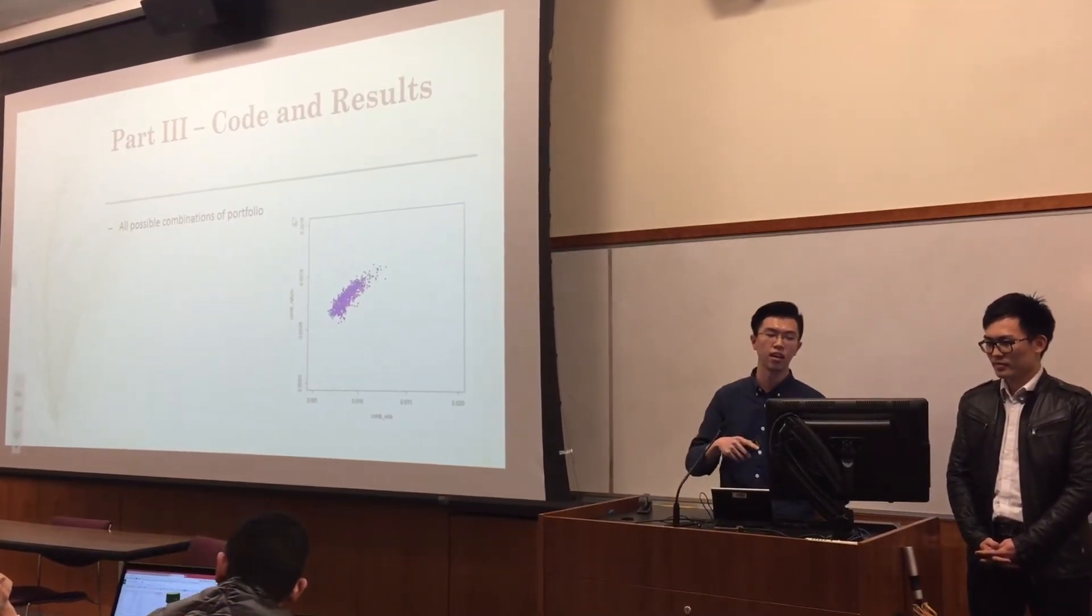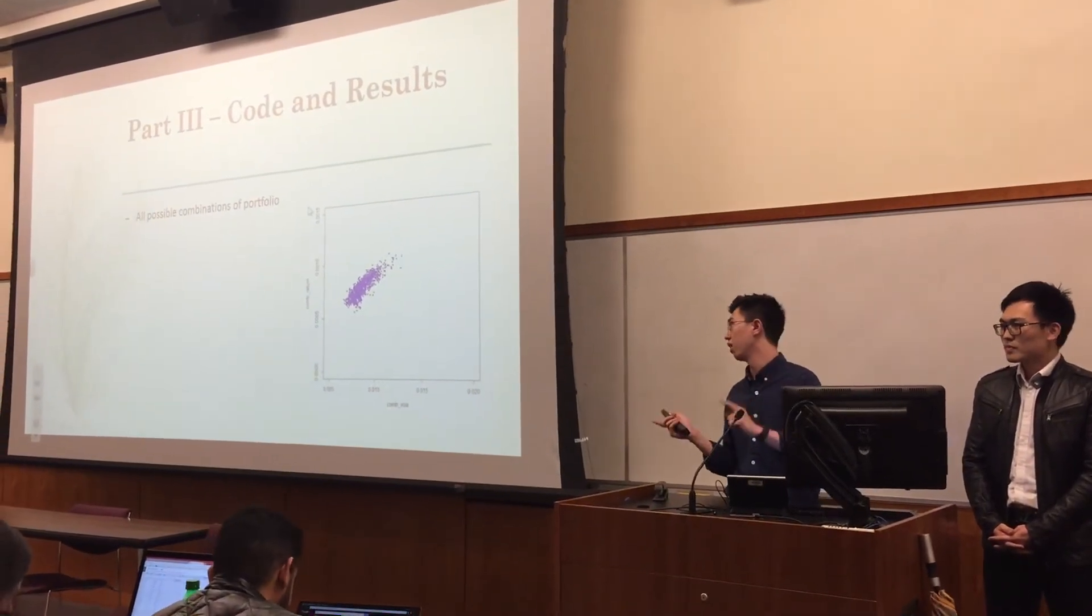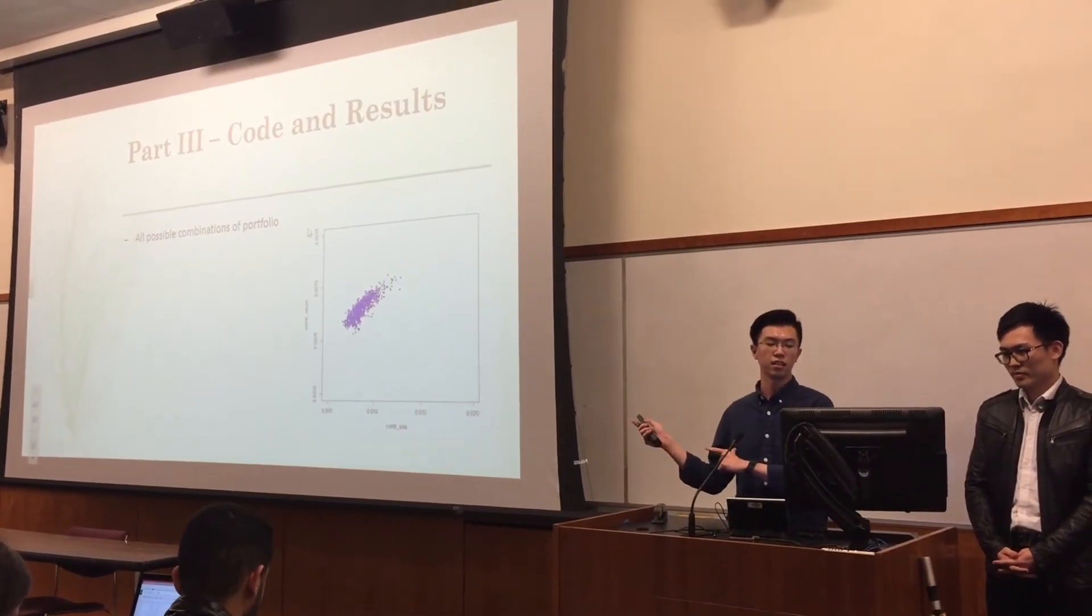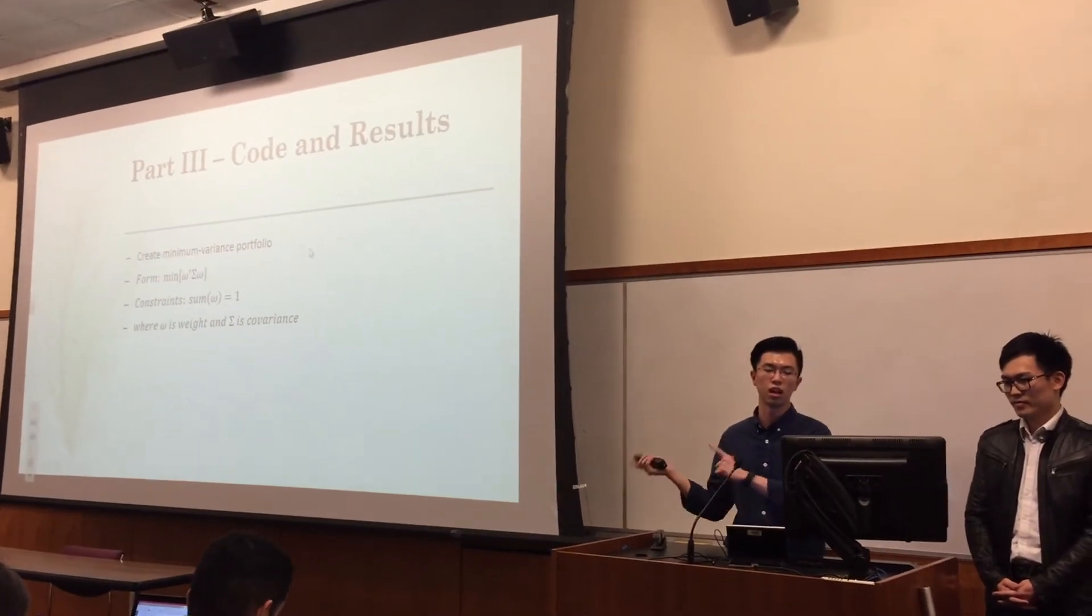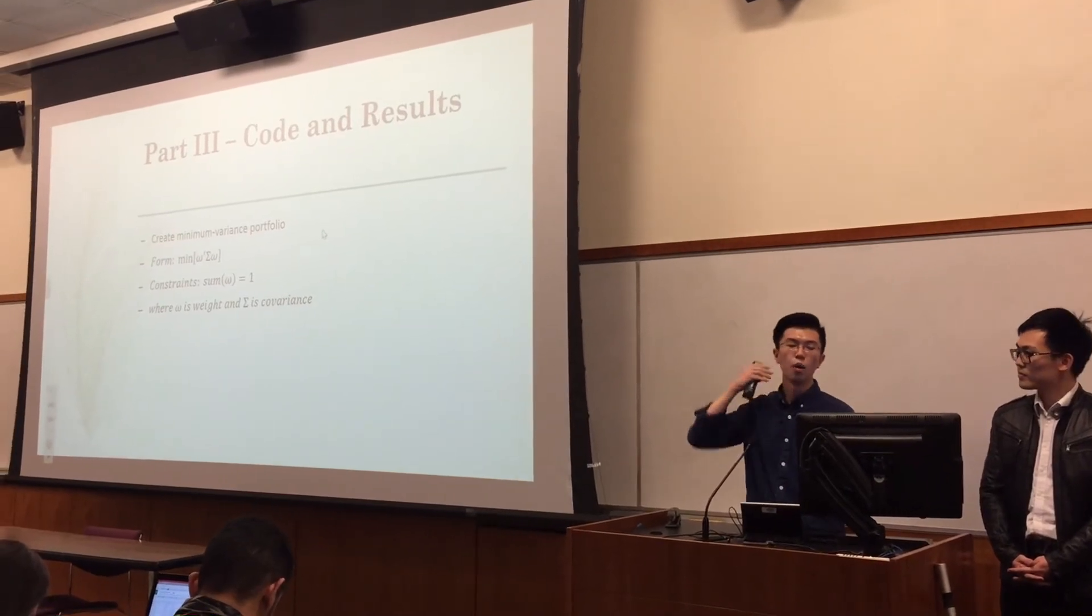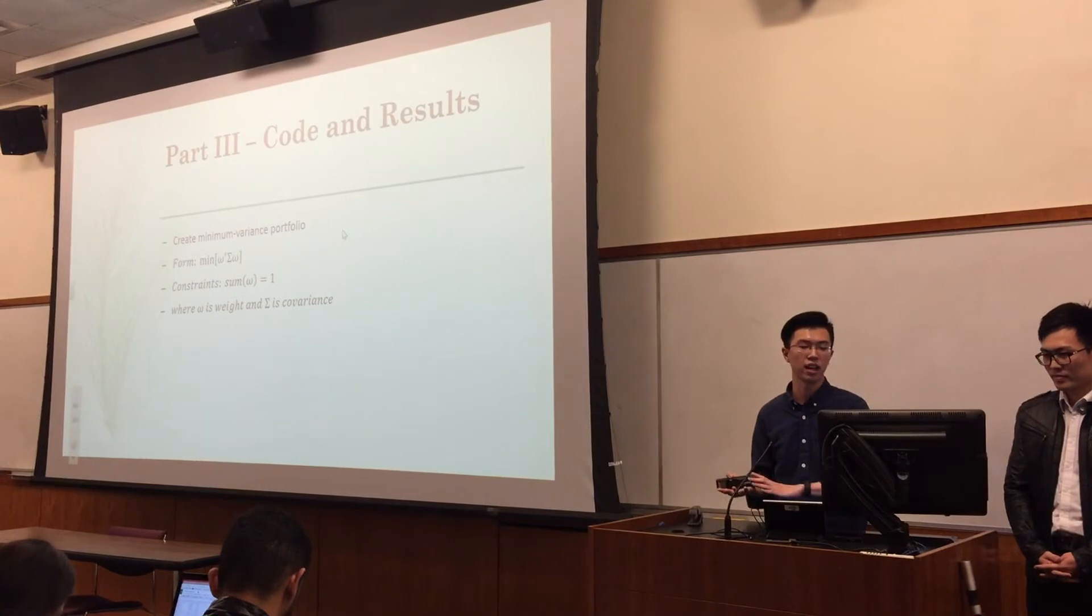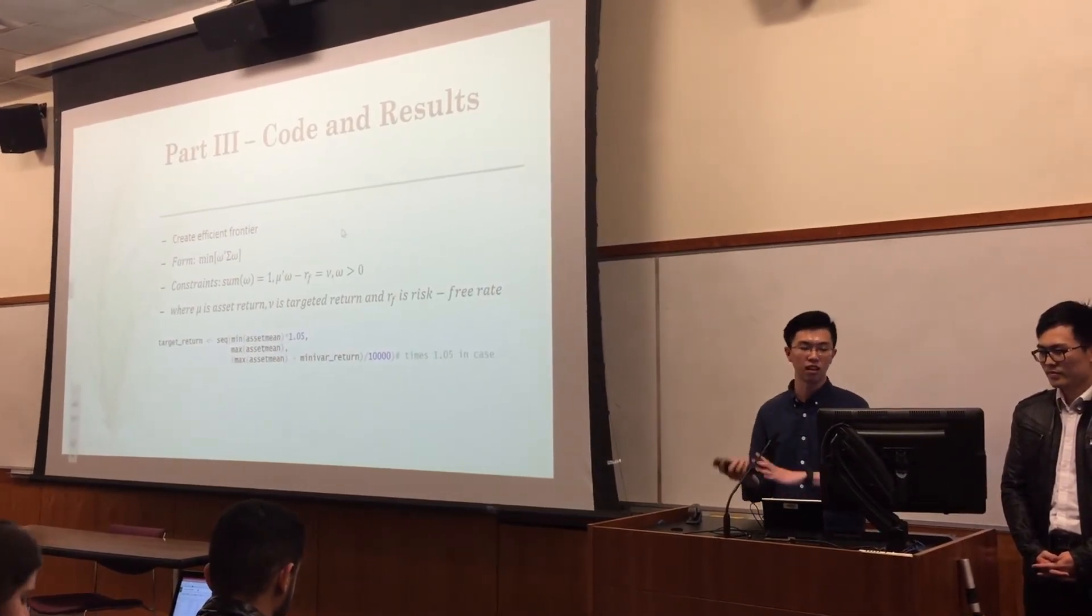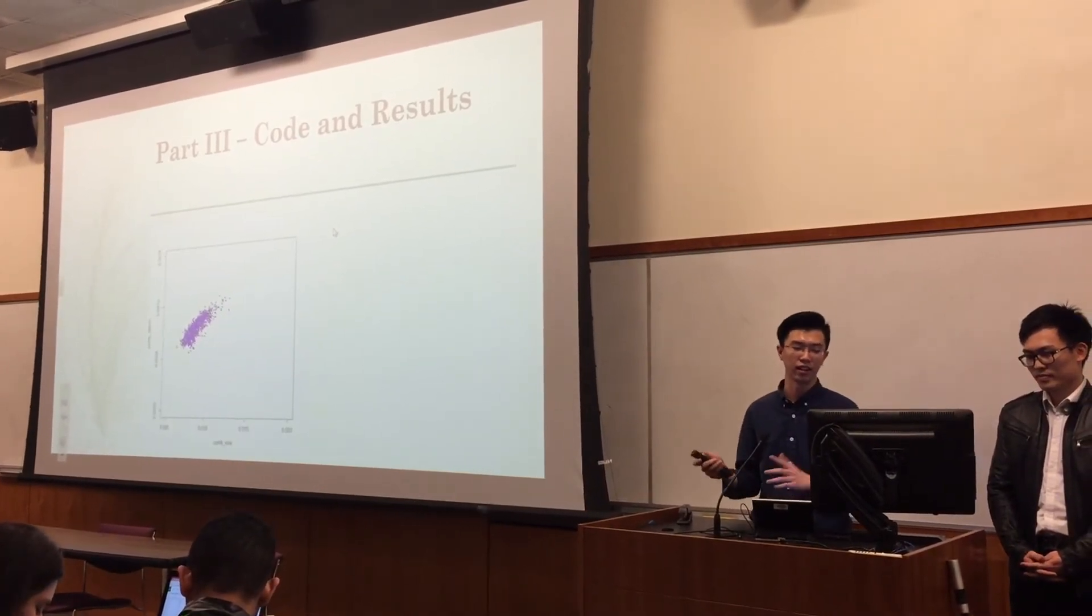First, what I did is to find out all the possible combinations of portfolio. I tried 10,000 times and plotted in blue dots, and second also the same. This is just an optimization problem - you type in the form, you type in the constraints, and then you get the results. And then the third is efficient frontier.